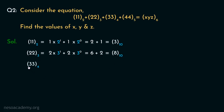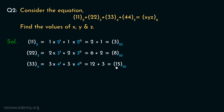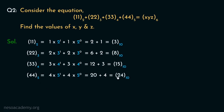For 33 of base 4: the place values are 4 raised to the power 1 and 4 raised to the power 0. So 3 times 4 is 12 and 3 times 1 is 3, giving 15. Therefore, 33 base 4 is 15 in decimal. For 44 base 5: 4 times 5 is 20 and 4 times 1 is 4, giving 24. Therefore, 44 in base 5 is 24 in decimal.